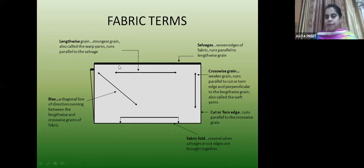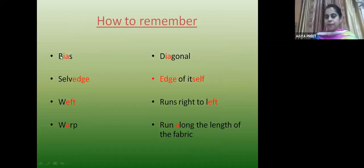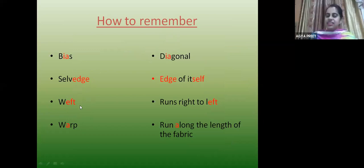A few tricks to remember: bias is related to diagonal — if you cut at a 45-degree angle, the warp and weft are on the 45-degree angle, that is bias. Selvedge is always at the edge — remember selvedge is always the edge. Weft runs right to left and along the length of the fabric.